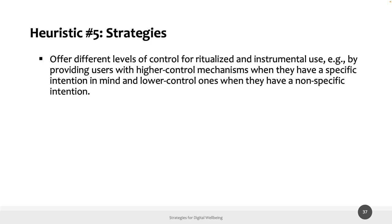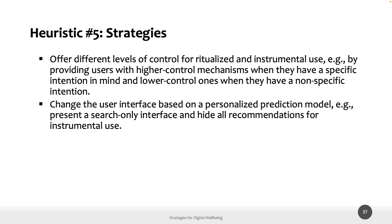Strategies include offering different levels of control for ritualized versus instrumental use — providing users with higher control mechanisms when they have a specific intention, and lower control when they have a non-specific intention. If we can intercept the kind of session a user is going to have, we could modify the interface to maximize the probability of respecting their digital well-being. Another strategy is to change the user interface based on a personalized prediction model — for example, presenting a search-only interface and hiding all recommendations for a user who has demonstrated low self-control.